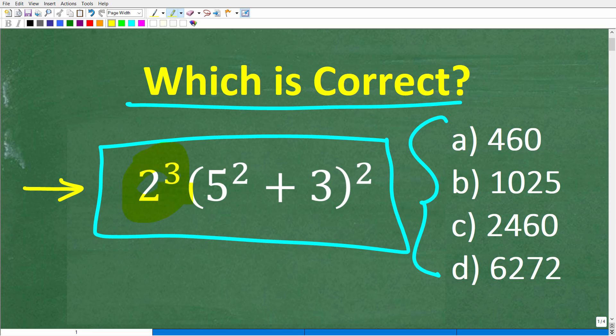We have 2 to the third power times 5 squared plus 3 squared. All right, so if you can figure this out, go ahead and put your answer into the comments section. I'll show you the correct answer in just one second, then of course I'm going to walk through step by step how to solve this problem without using a calculator.